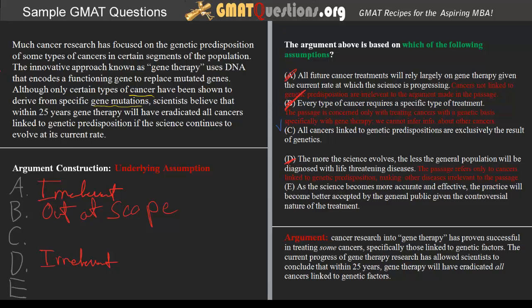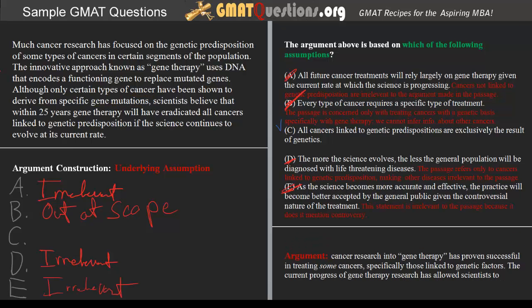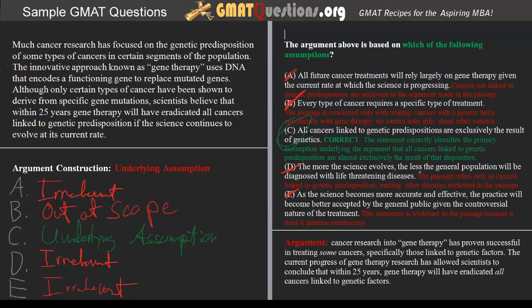Answer choice E states: as the science becomes more accurate and effective, the practice will become better accepted by the general public given the controversial nature of the treatment. E is incorrect because it is irrelevant to the passage — the passage does not mention controversy. This leaves C as the only correct answer, presenting the underlying assumption that the projected efficacy of gene therapy over 25 years is contingent on the assumption that all cancers linked to a genetic basis are also exclusively the results of genetics. This has been a tutorial from GMATQuestions.org; we encourage you to explore the rest of our website and thank you for watching.